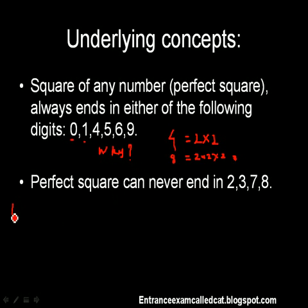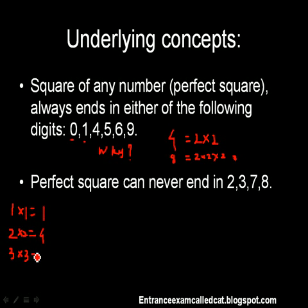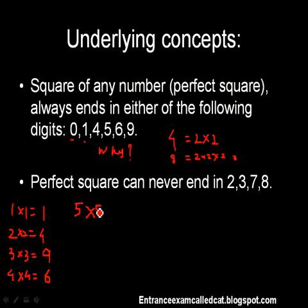Pretty simple. If the unit place of a number is 1, then the square will have its unit place as 1×1 = 1. If the unit place is 2, the square ends in 2×2 = 4. If the unit place is 3, the square ends in 3×3 = 9. If the unit place is 4, the unit place of the square is 4×4 = 16, so unit place is 6. If the unit place is 5, then the square ends in 25, giving 5 at the unit place.